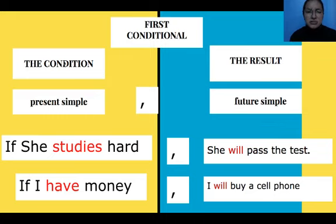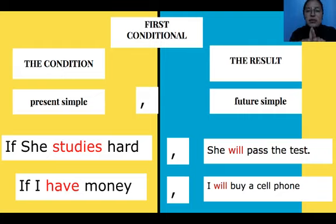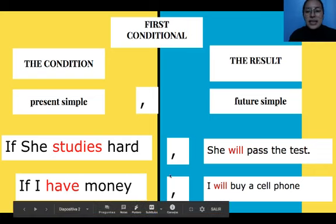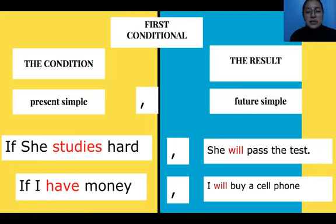What is a condition? A condition is like an action, and the result is like a consequence. In the First Conditional, you have to join present simple and future simple. In the case of present simple, remember this rule: in the third person — he, she, and it — you have to add an 'S' to the verb. And in the case of future simple, you have to remember the auxiliary 'will.'